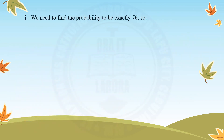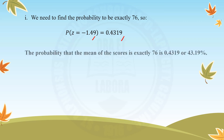We need to find the probability of the score being exactly 76. The probability of Z equal to −1.49 is 0.4319. Therefore, the probability that the mean of the scores is exactly 76 is 0.4319, or 43.19%.